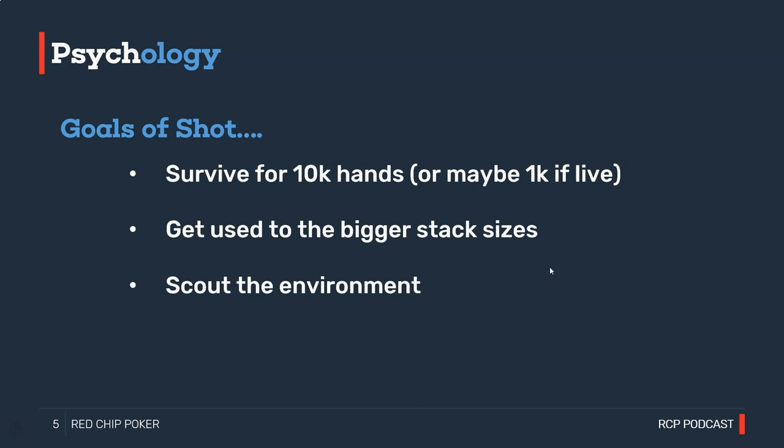Surviving a bit longer also gives us a chance to scout the environment — see what types of players are at that limit, get colored tags on opponents or build HUD stats online, and in live play figure out who the regs are, what the pre-flop sizings are, and what the game flow feels like. This gives us time to settle down psychologically and see our A-game start to appear. Any imposter syndrome disappears, and our brain switches from thinking 'I'm an NL100 reg playing NL200' to 'I belong here — I've survived.' That relaxation allows our A-game to appear more consistently.